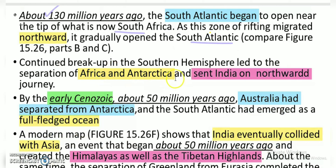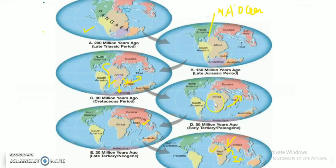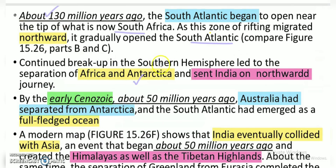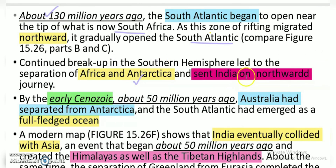In the southern hemisphere, Antarctica separated from South America. Antarctica was separating, and India was sent northward — moving towards the north.